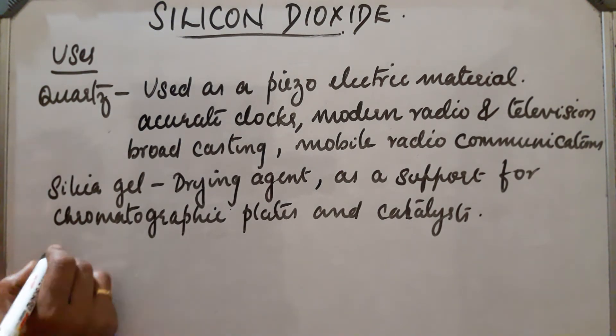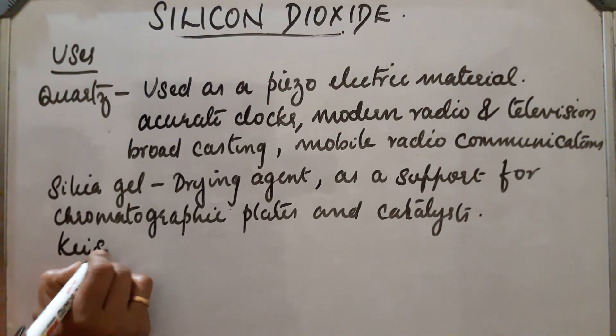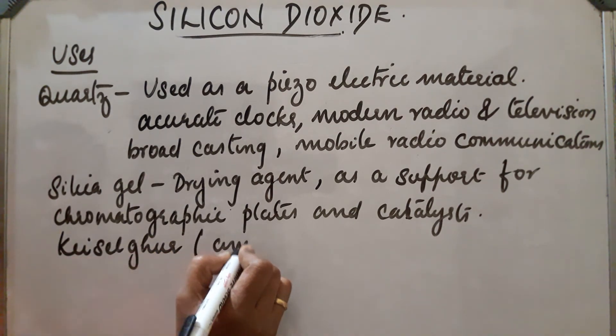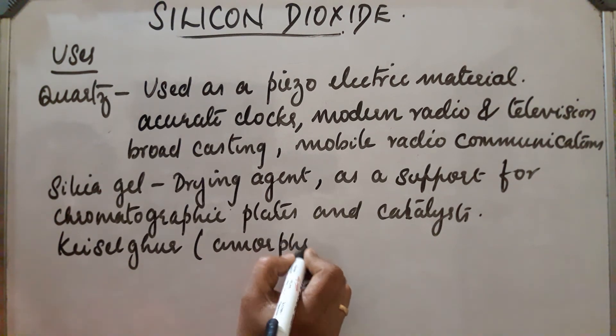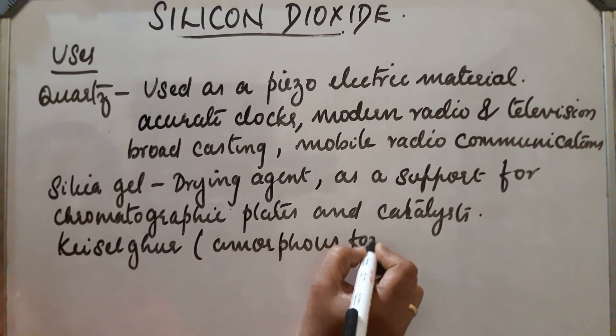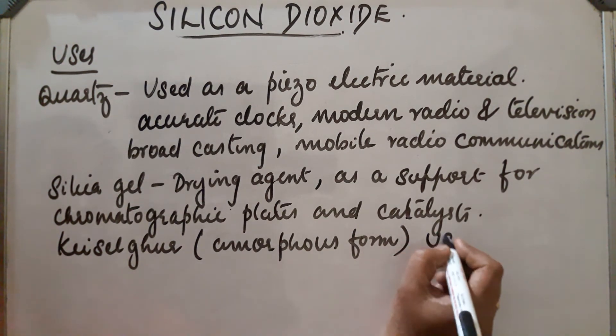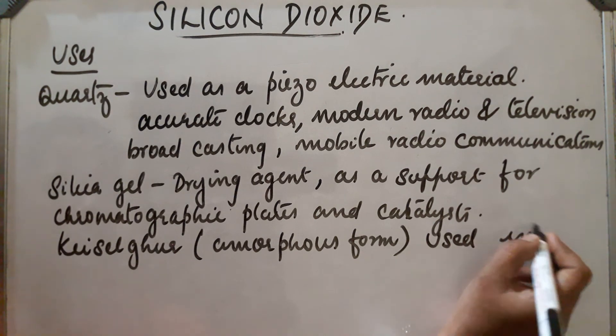Next, kieselguhr. Kieselguhr, it is an amorphous form of silica, amorphous form. It is used in filtration plants, used in filtration plants. These are the different uses of silica.